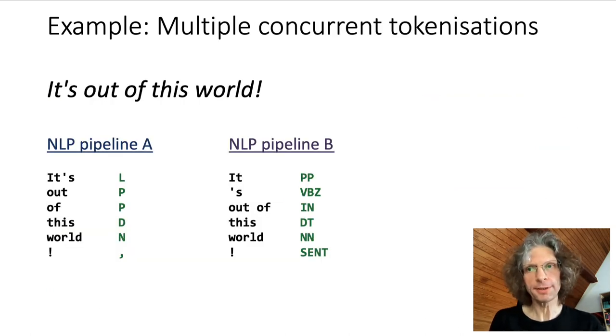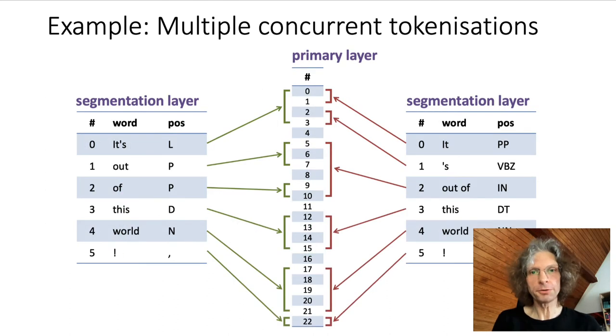Finally, a more challenging example where we have multiple concurrent tokenizations of the sentence, it's out of this world, created by two different NLP pipelines and also with different annotations on top. It's actually possible to represent this situation in Ziggurat using a virtual primary layer corresponding to individual characters. So each position in a primary layer is a single Unicode code point in the original text file. This virtual primary layer doesn't need any variables, saving a lot of disk space for storage of the character sequence.